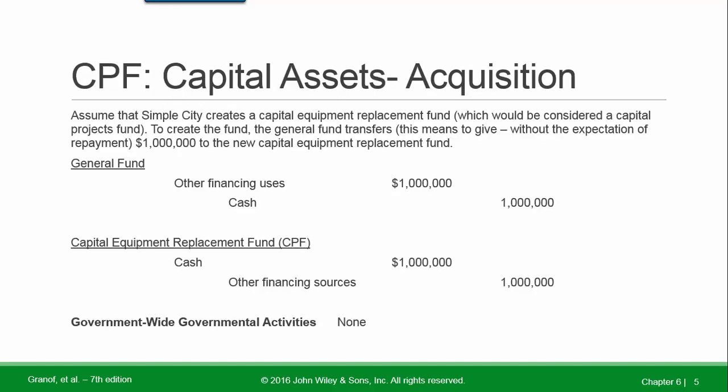Acquisition of Capital Assets. Assume that Simple City creates a capital equipment replacement fund, which would be considered a capital projects fund. To create the fund, the general fund transfers — meaning gives without the expectation of repayment — one million dollars to the new capital projects fund. In the general fund: debit Other Financing Uses, credit Cash. In the capital replacement fund (the capital projects fund): debit Cash, credit Other Financing Sources. This has no effect on government-wide reporting because cash is simply being moved from one governmental fund to another.